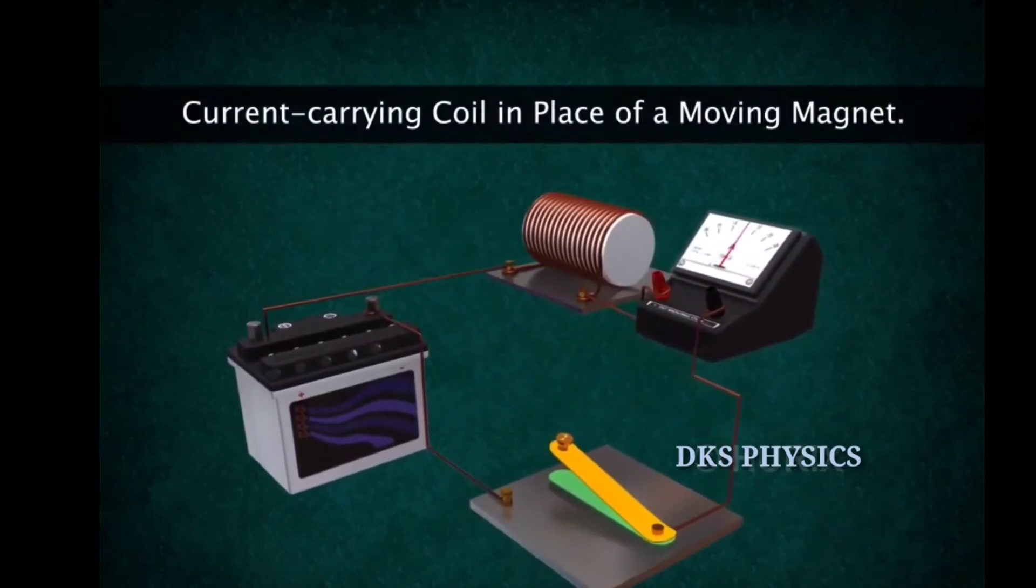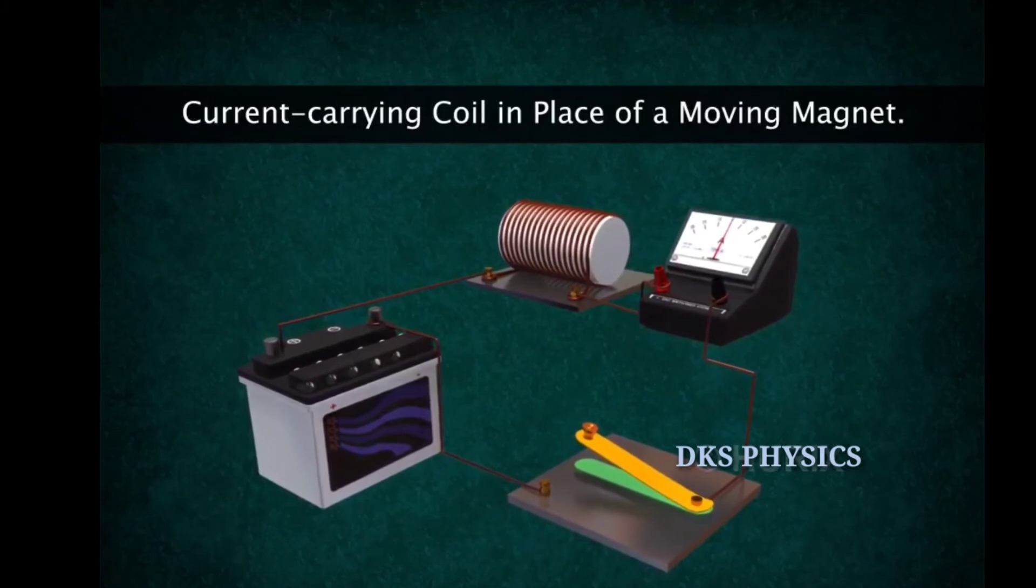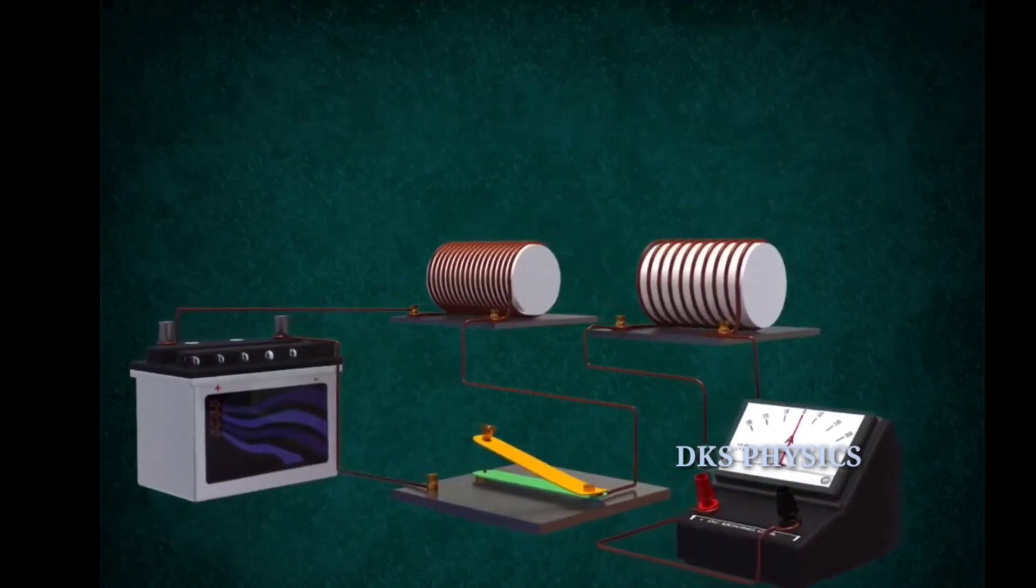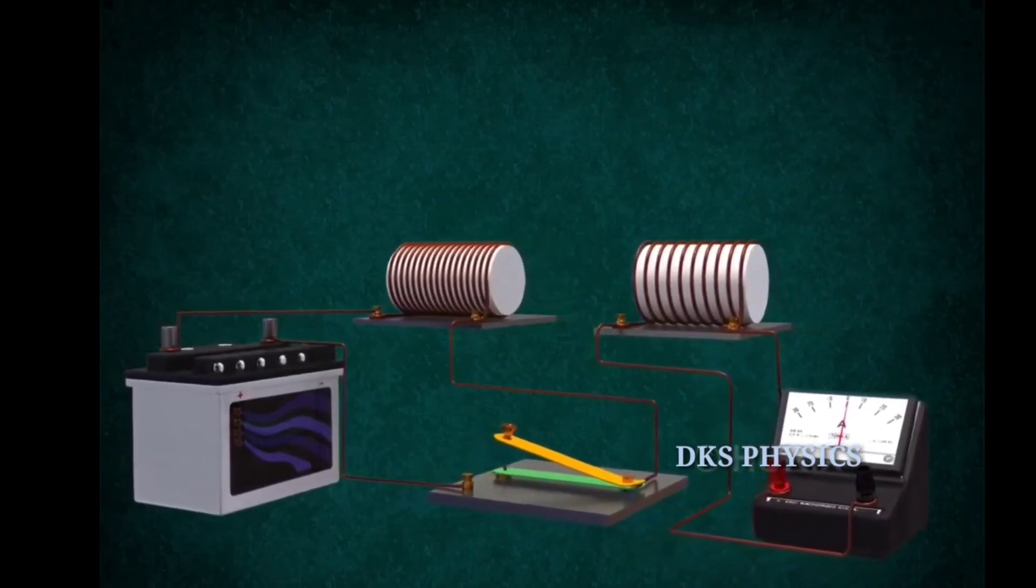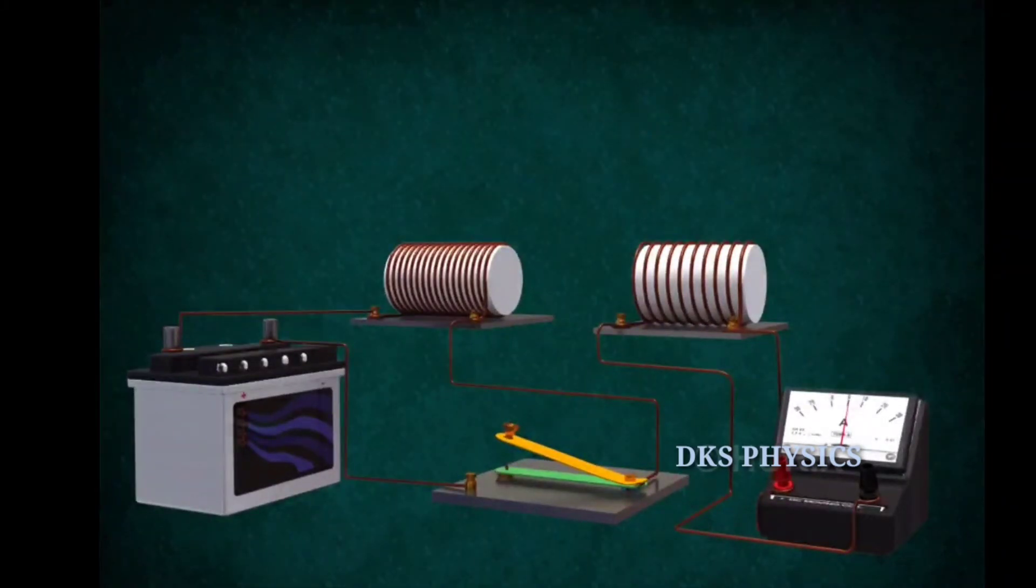Let us replace the moving magnet with a current carrying coil with a greater number of turns. Let us connect another coil as shown here and name the current carrying coil the primary coil and the coil connected to the galvanometer, the secondary coil.